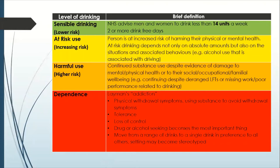The next step up would be harmful use, which is the higher risk category. This is when there is continued alcohol consumption despite evidence of damage to the person's mental or physical health, or to their social, occupational and familial well-being. An example would be continuing to drink alcohol despite evidence on recent blood tests of deranged liver function tests or pancreatic function tests, or it could be missing work or poor performance at work related to drinking, tiredness, blackouts and poor sleep.